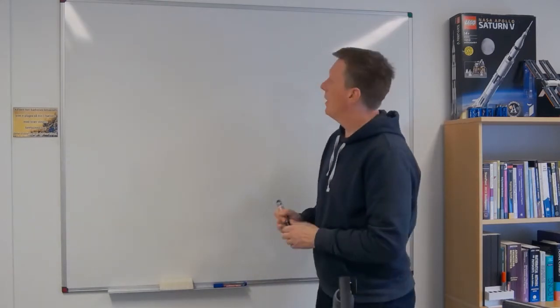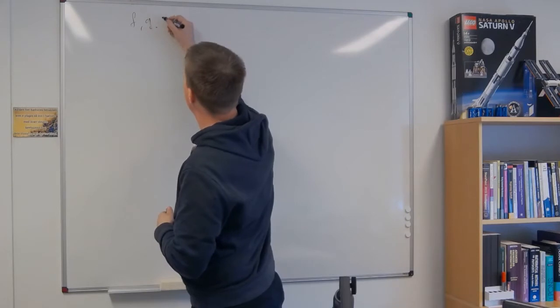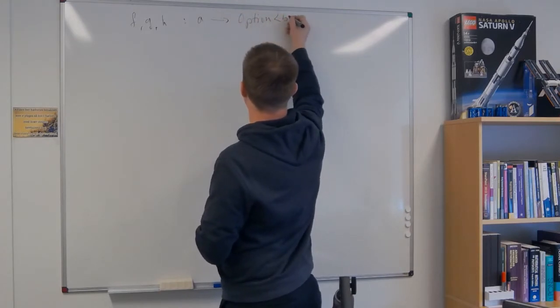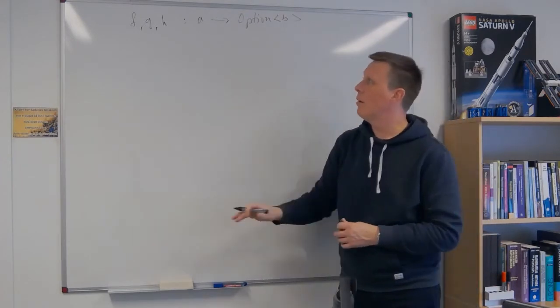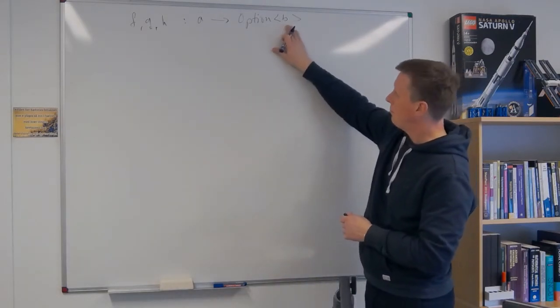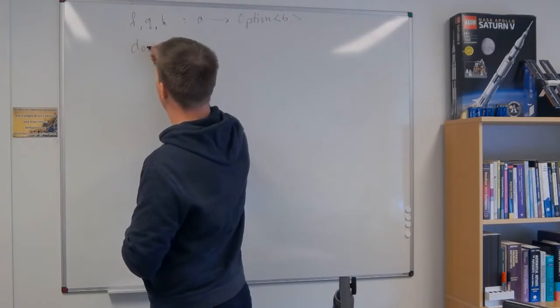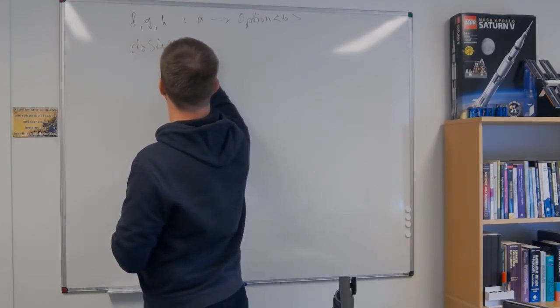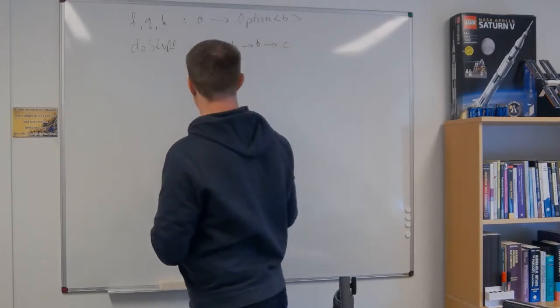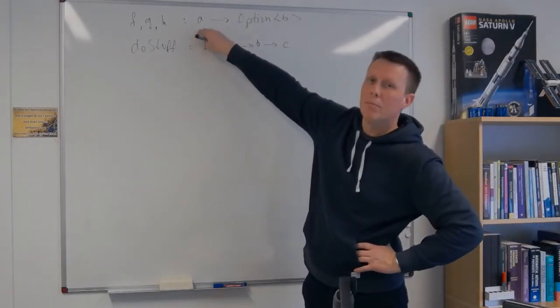So let's first define three functions F, G and H and they all have this A to option of B signature. These are all three functions that take some value A and produce an option of B. And then I have some function called do stuff that takes a B and a B and a B and produces some C. These are all potentially failing functions.